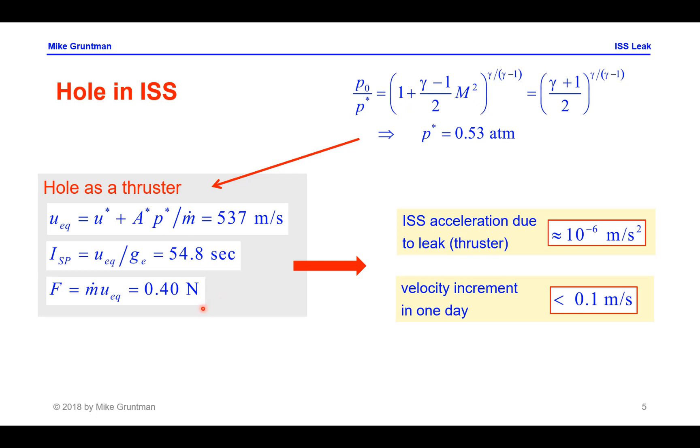Thrust produced is 0.4 Newton. The International Space Station is a very large object, its mass is about 400 metric tons. So its acceleration due to this leaking hole from the station would be about 10 to the minus 6 meters per square second, which translates into the velocity increment accumulated during one day to a little bit less than 0.1 meter per second.